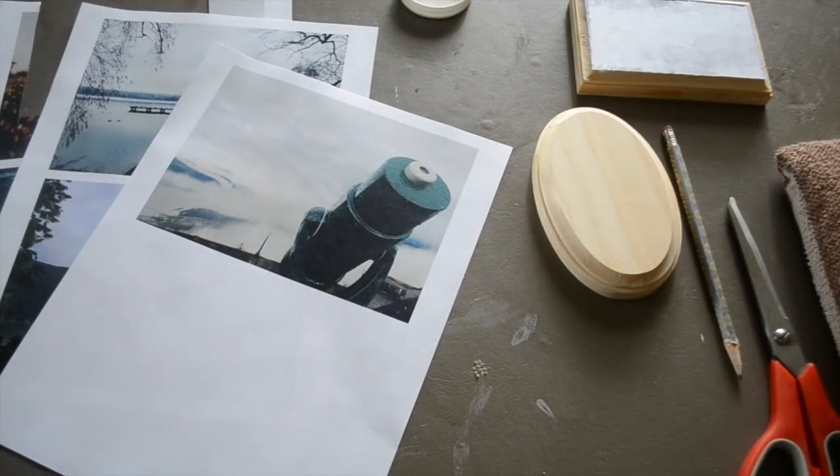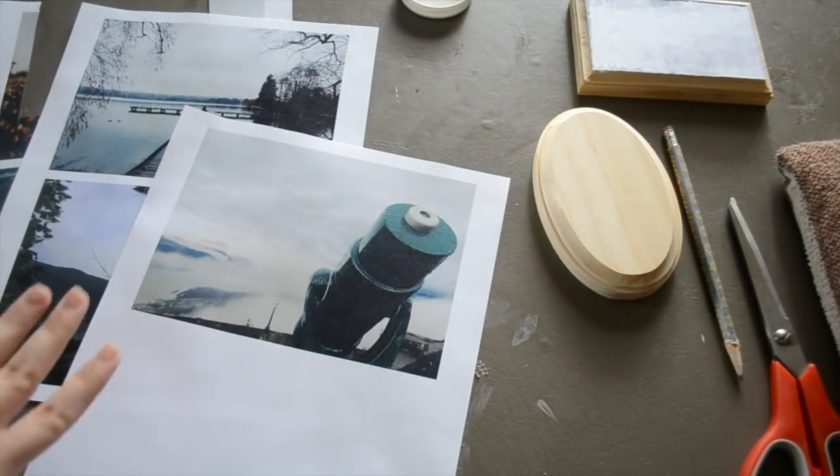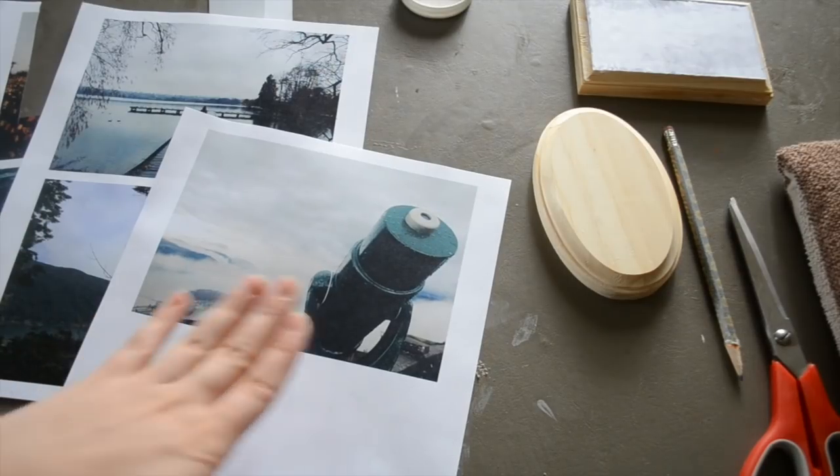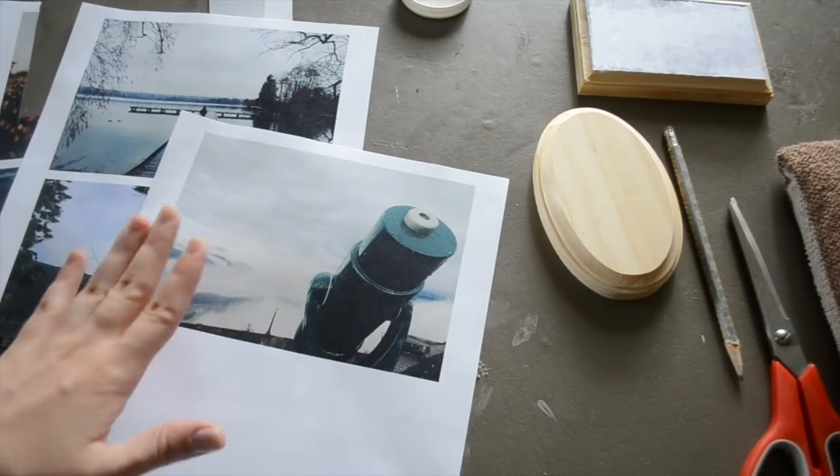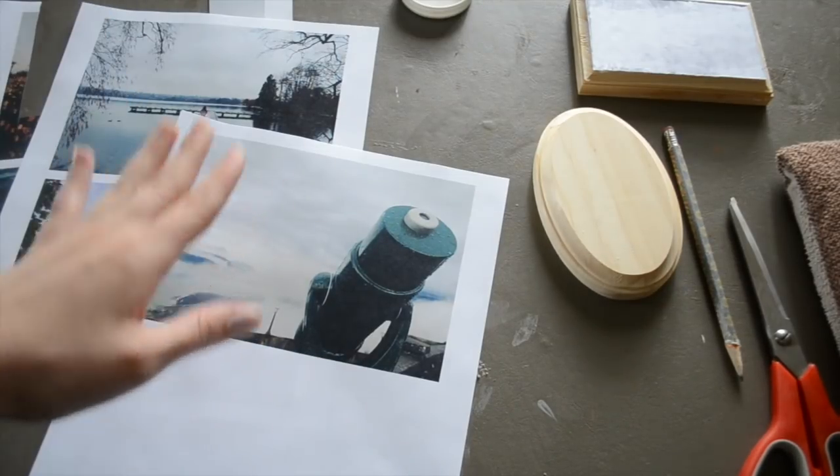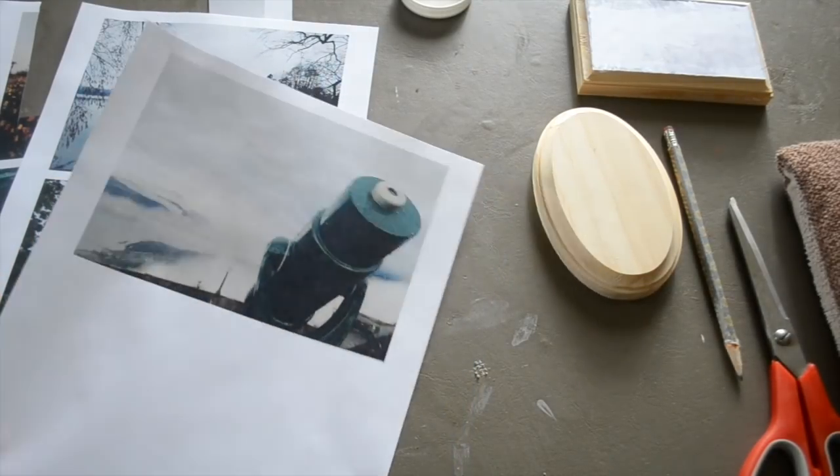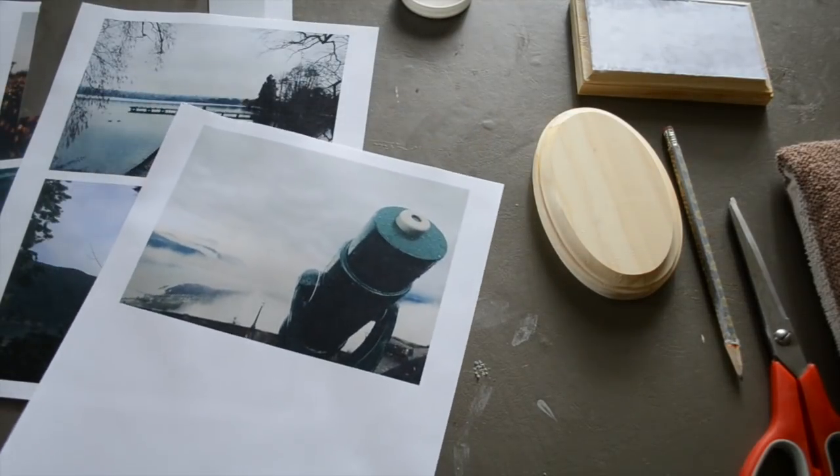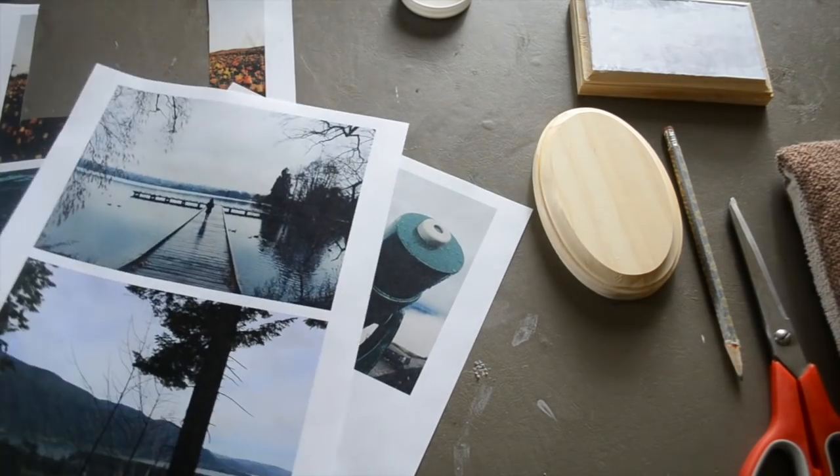The first step in this project is printing your photos. One thing to keep in mind is if you have photos with text or people in them, you'll need to reverse the image because it's going to be the opposite when it gets transferred to your wood surface. It's really important to get these printed on regular paper but with a laser printer, so you'll probably need to go into an office supply store to get that done.